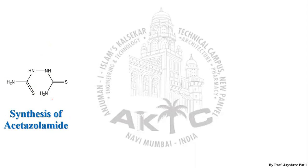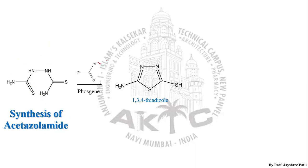This reactant, when treated with phosgene — this is the structure of phosgene — we are getting 1,3,4-thiadiazole, which is the main heterocycle. It is expected that this amino group (NH₂) will get acylated by reaction with phosgene.